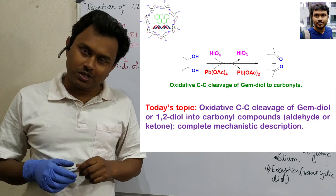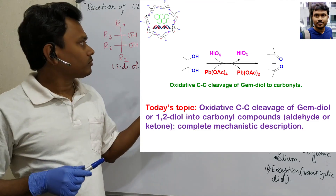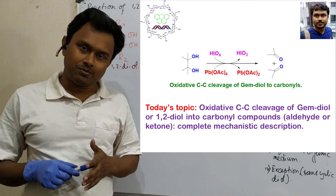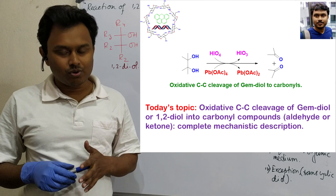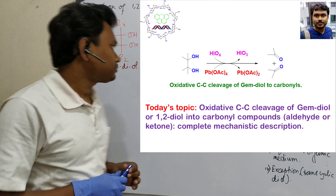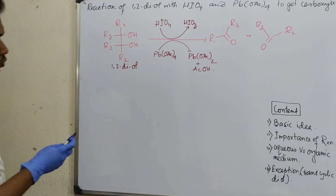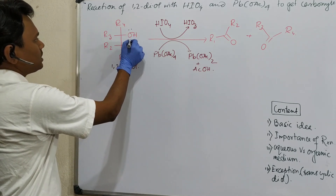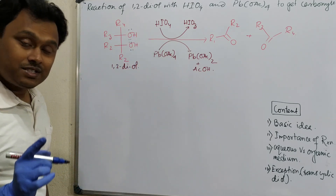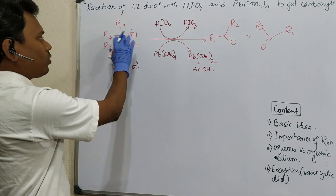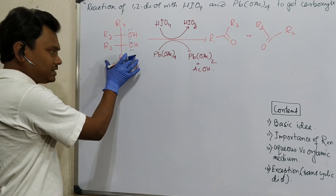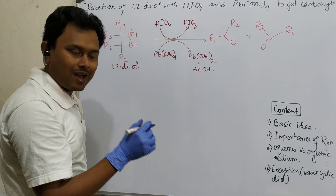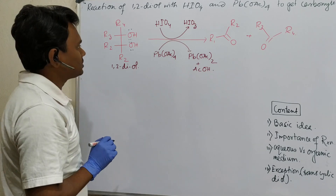So a lot of chemistry to be learned today. This is a 1,2-diol. I am not saying it's cis or trans because it's an open chain. If it is in cis, the reaction will happen easily. But if it is trans, then C-C rotation is needed, and after that it will happen — you will understand during the mechanism discussion.